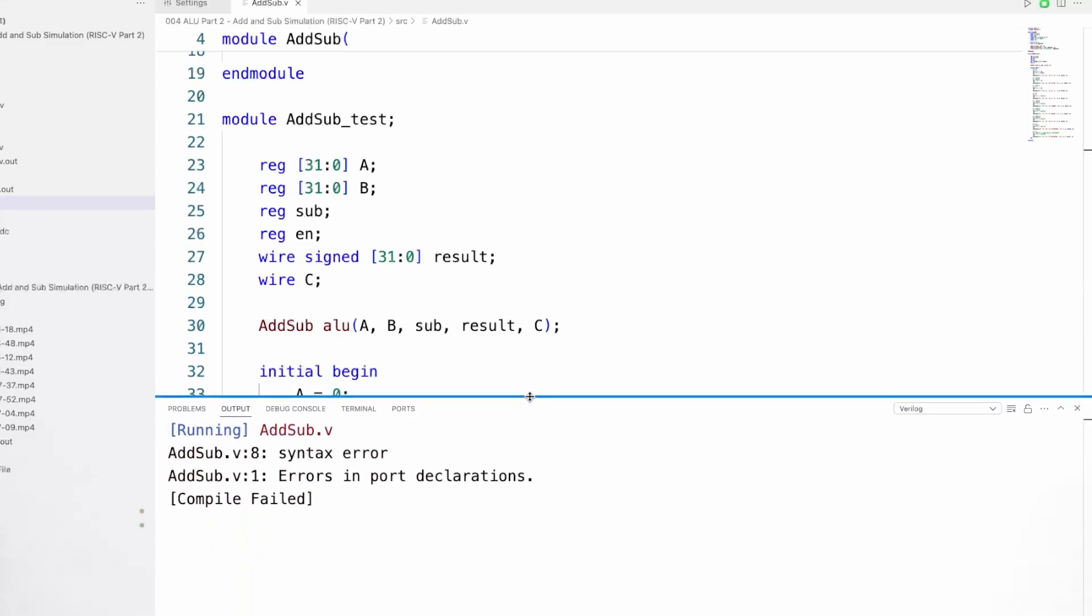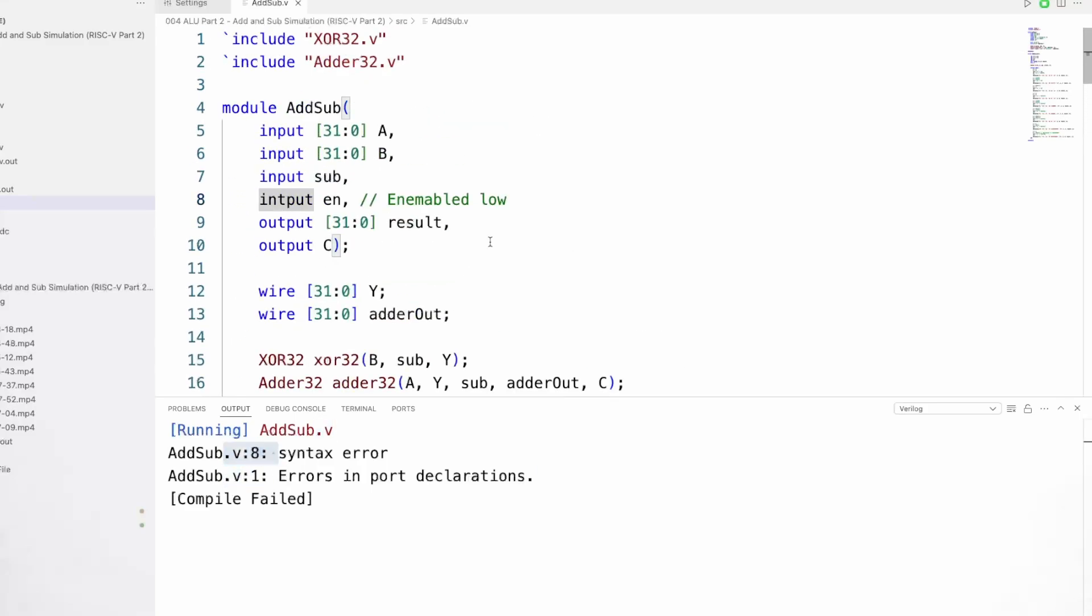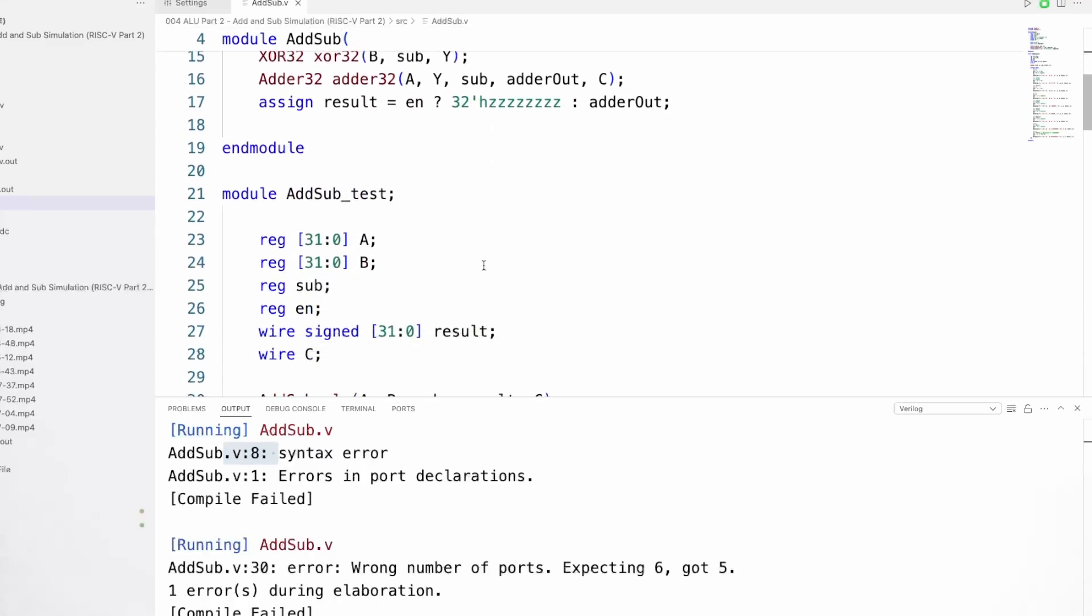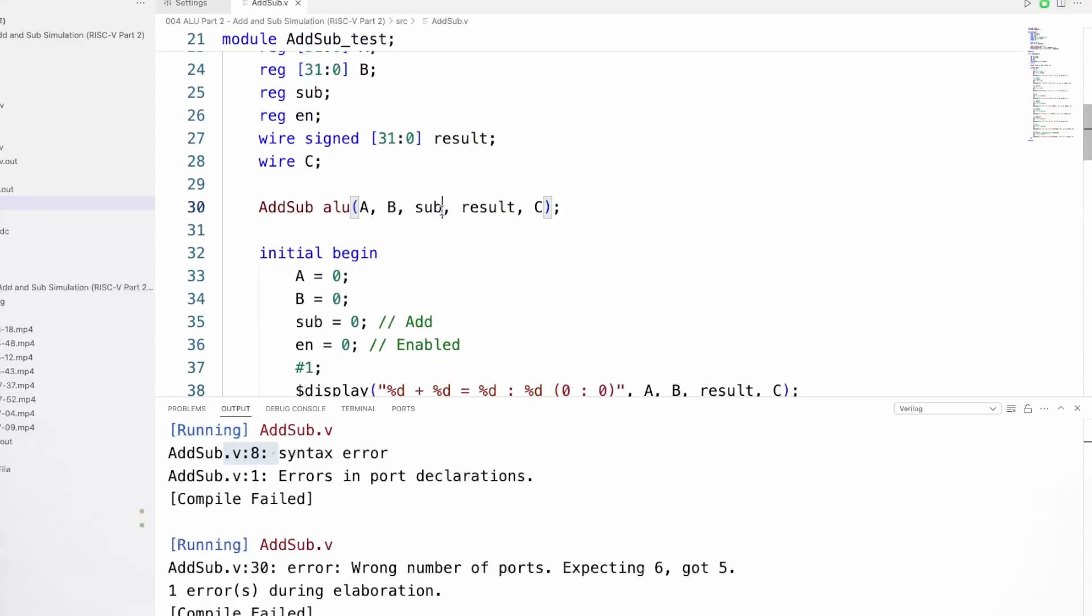Of course, I've got a syntax error in my port declaration. Let's have a look at that right up on line. We have line one and line eight. Of course, I have a typo here, so that's easy to fix. And I've got the wrong number of ports, so I've forgotten to put that into here. Our enable signal should be coming in here as well.